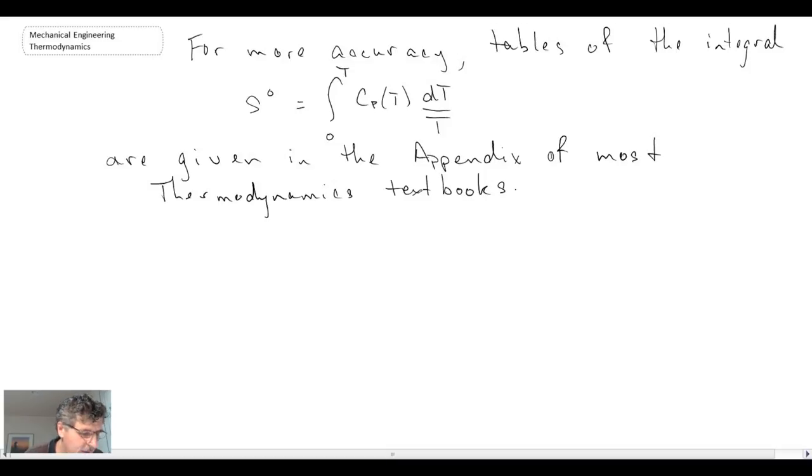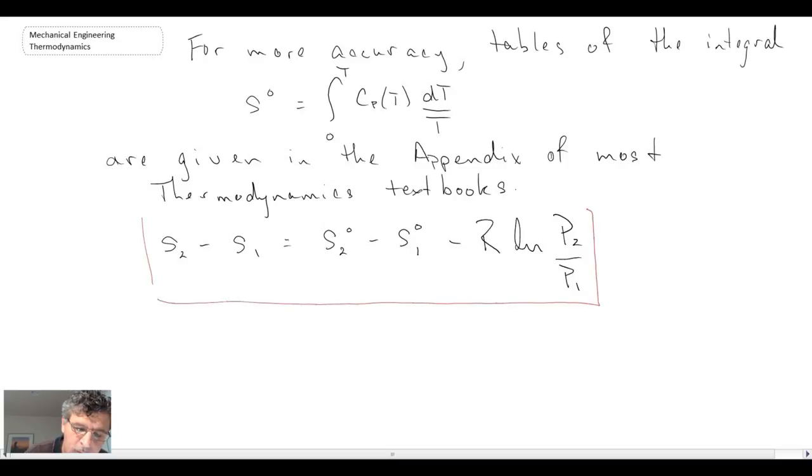So these are often given in the back of books. So the way that you would evaluate that, if you were looking to evaluate the change in entropy between two states, so that would be the equation that you would be using. And that is how you could evaluate an exact form of change in entropy. Okay, so that is how we can treat entropy change in ideal gases.